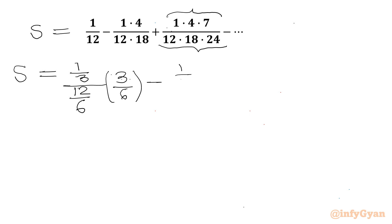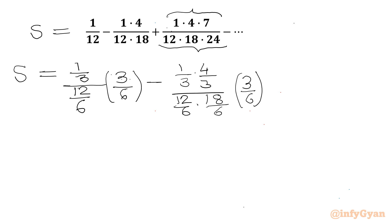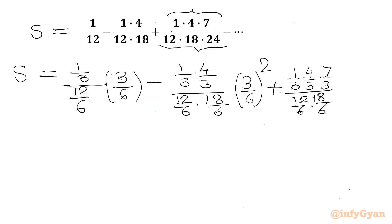Minus the second term: (1/3) times (4/3) over (12/6) times (18/6), so we need to multiply by (3/6) squared. Similarly the third term: (1/3)×(4/3)×(7/3) over (12/6)×(18/6)×(24/6), and we multiply by (3/6) cubed, minus ... and so on.